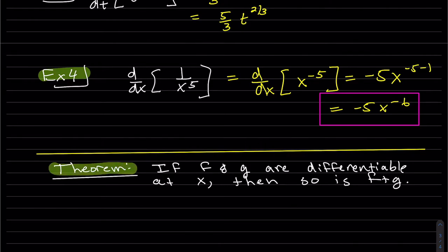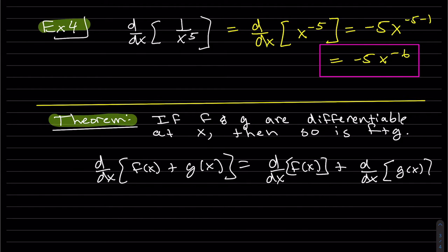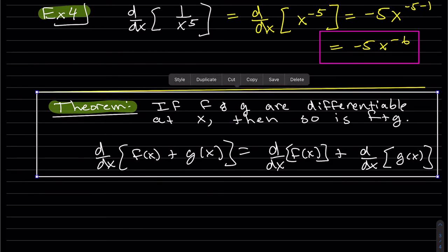So this one, this theorem says, if f and g are differentiable at x, then their sum is differentiable at x. The derivative of f of x plus g of x is basically the derivative of the sum is the sum of the derivative. And we don't really need to prove this because we know the definition comes from limits, and we already know the limit of the sum is the sum of the limits when that limit exists. So just keep that in mind. We'll be doing that a lot.